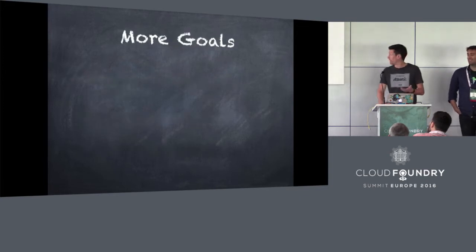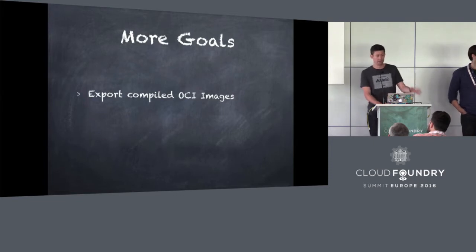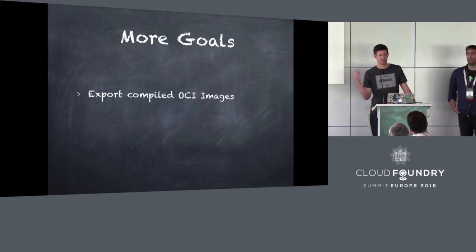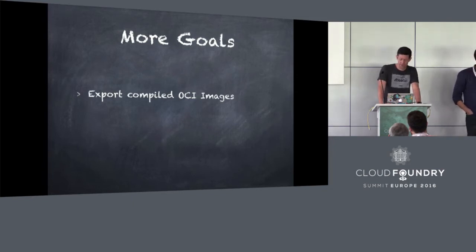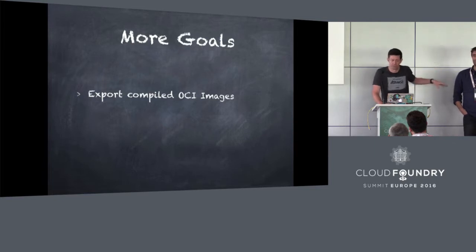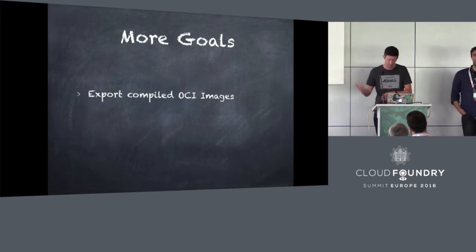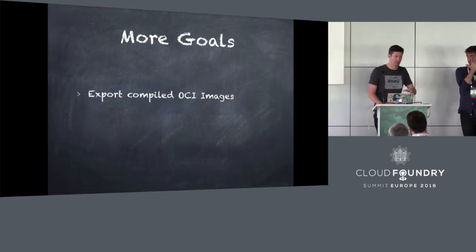So, some more goals - how could this be better? What if we exported compiled OCI images after staging? The OCI - the Open Container Initiative - was started about a year and a half ago by Docker and CoreOS and others. Along with the runtime spec from which we get runC, there's an image specification, which is very similar at the moment to Docker images. You can sort of think of this as a Docker image, but the OCI part is important - it's an open standard, something we can all collaborate on, good for interoperability between Cloud Foundry and other platforms.